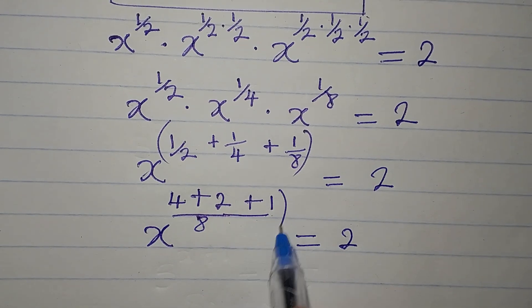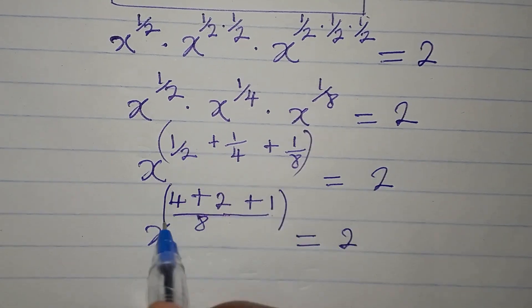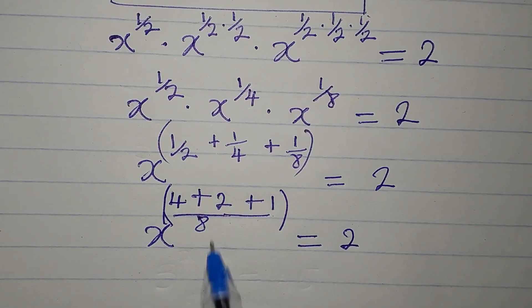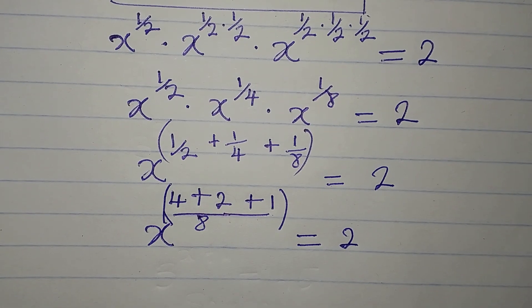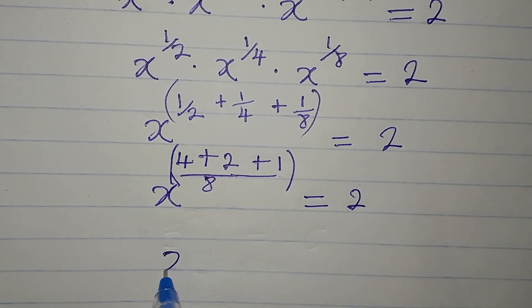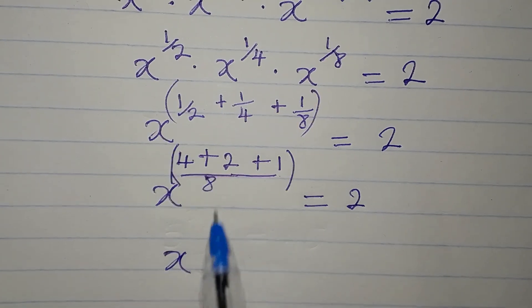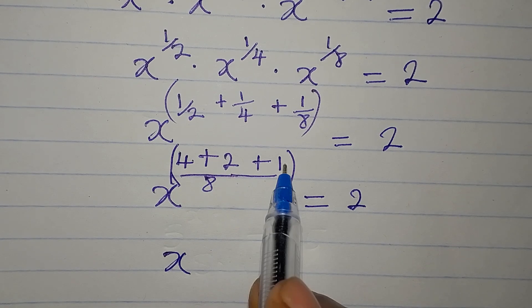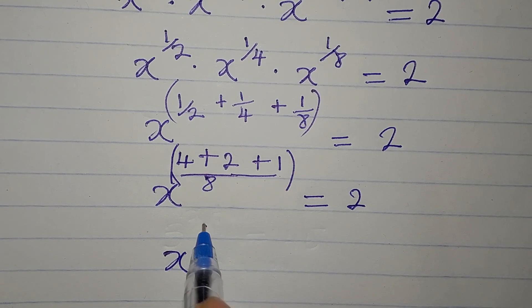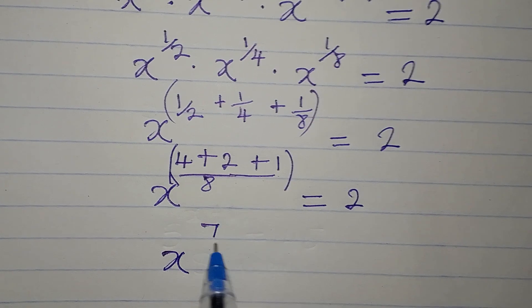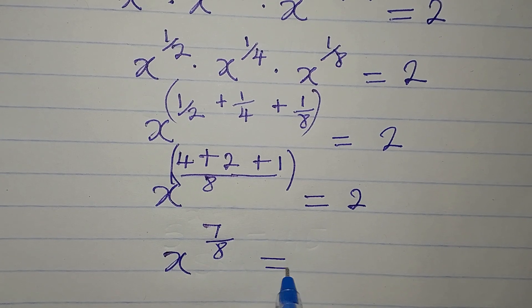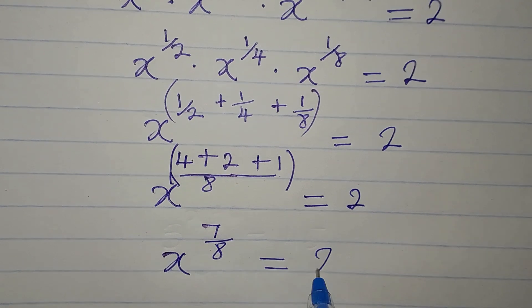The whole of 7 over 8 is the power of x. So we have x to the power of 7 over 8, and this equals 2.